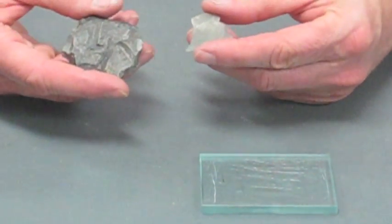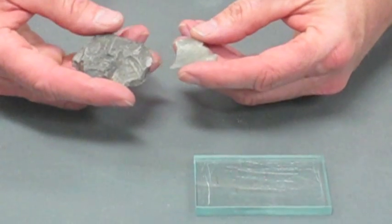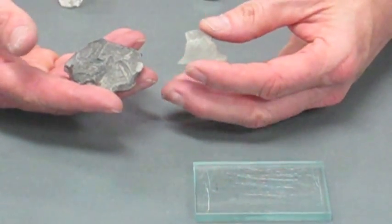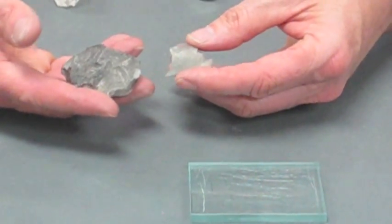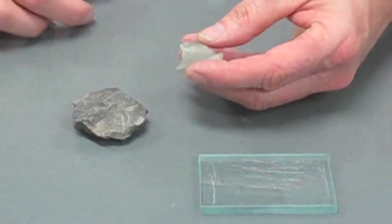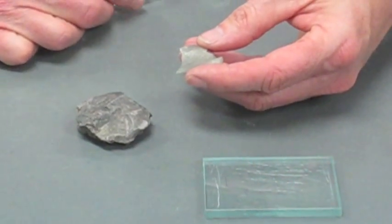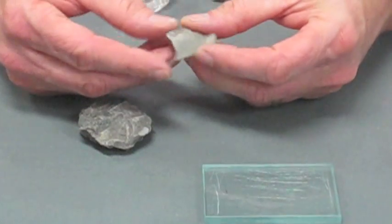This is the mineral chalcedony. It's a microcrystalline type of quartz, so it has many of the characteristics of quartz, but the crystals are so tiny you won't see nice crystal faces like something like this. And it really looks fine-grained.